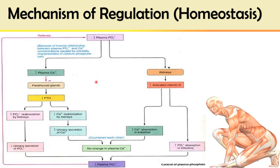The third factor, calcitonin, is secreted by the parafollicular C-cells of the thyroid gland. It also regulates plasma calcium and phosphate levels but by opposing the action of parathyroid hormone, so calcitonin is antagonistic to PTH and they have an inverse relationship in terms of their actions.